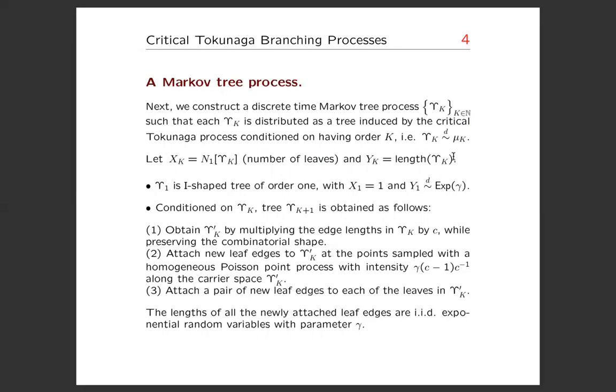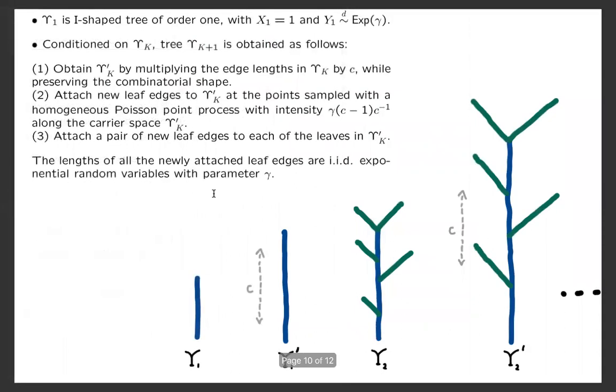So the tree process is constructed as follows, as listed with the steps below. So I copy the steps here with an illustration. First of all, ε_1 is just an I-shaped tree, that is just a leaf. So X_1 equals one, there is only one leaf, and Y_1, which is the length, is just the length of the leaf, which is exponentially distributed with parameter gamma.